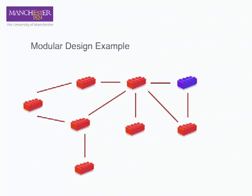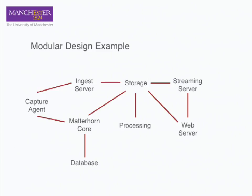You might want to change one building block. At my institution, Matterhorn ships with a free open source streaming server called Red 5. However, our staff are not experienced with Red 5 — they're trained with Wowzer. So for our Matterhorn instance, we're using Wowzer to deliver our streams rather than the built-in Red 5. Similarly, Matterhorn ships with MySQL, which isn't really supported by my host institution, so we've chosen to run Matterhorn talking to a Microsoft SQL server. We've done an integration replacing that module with something that works better for us, while still using the same processing architecture and Matterhorn core.